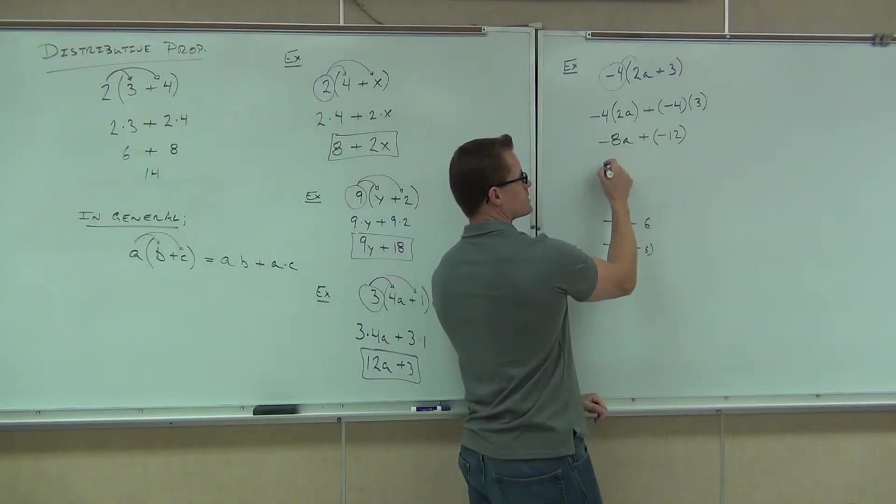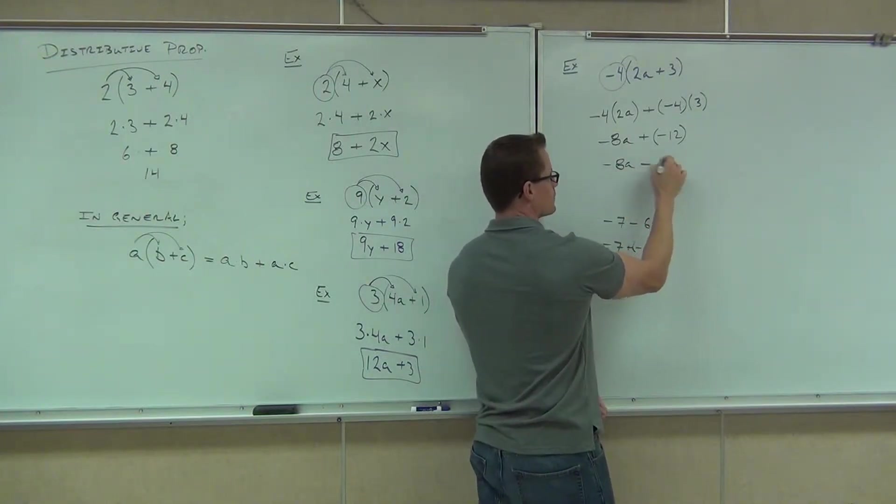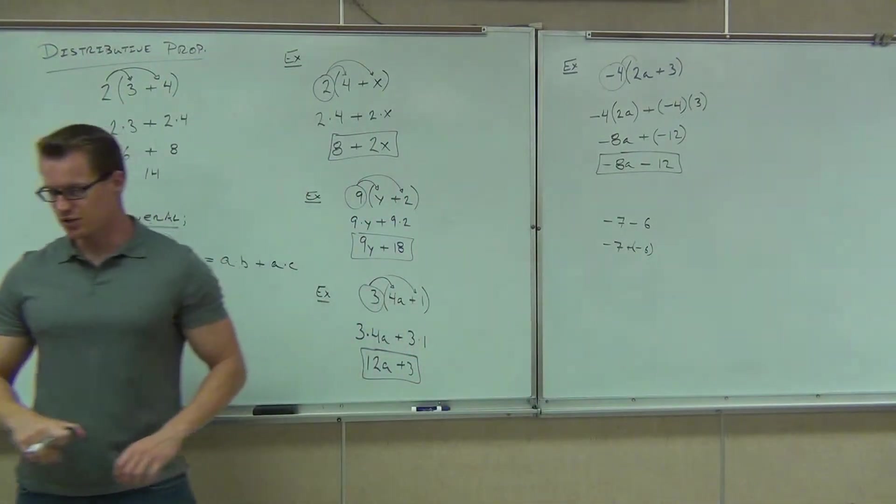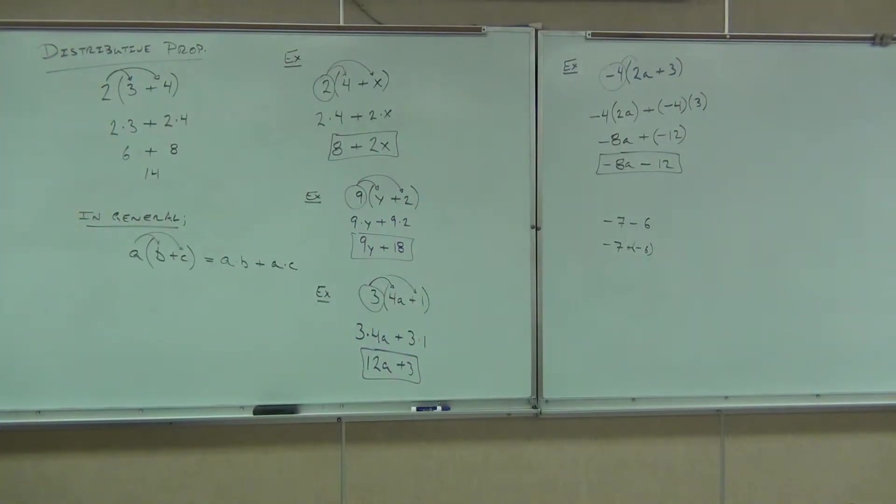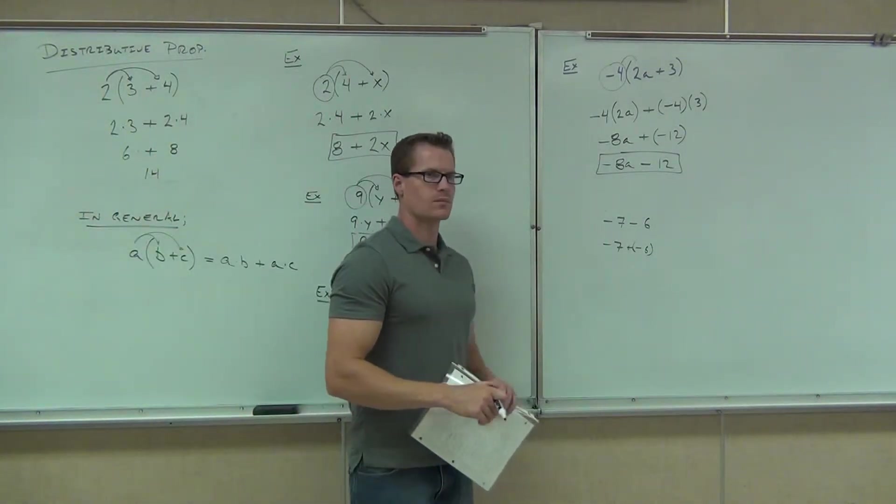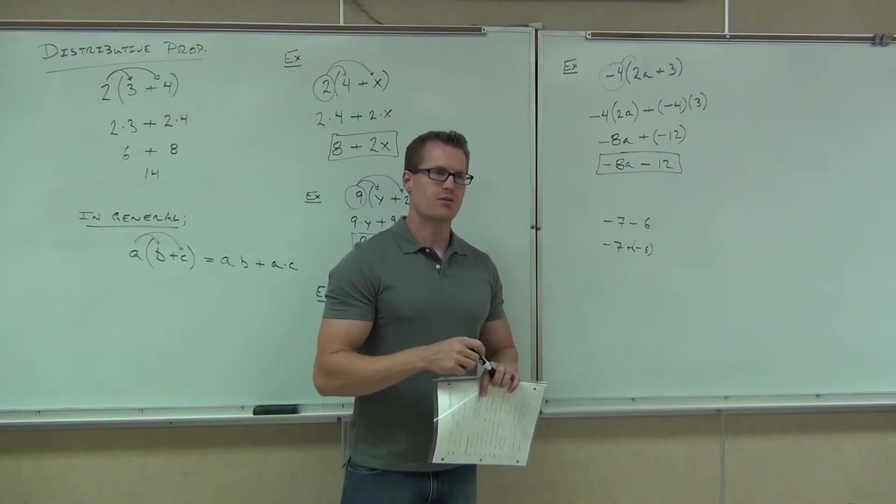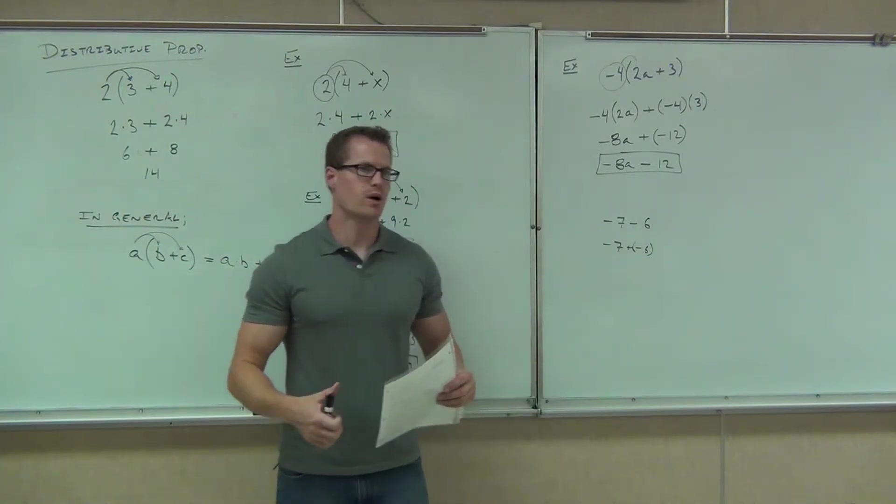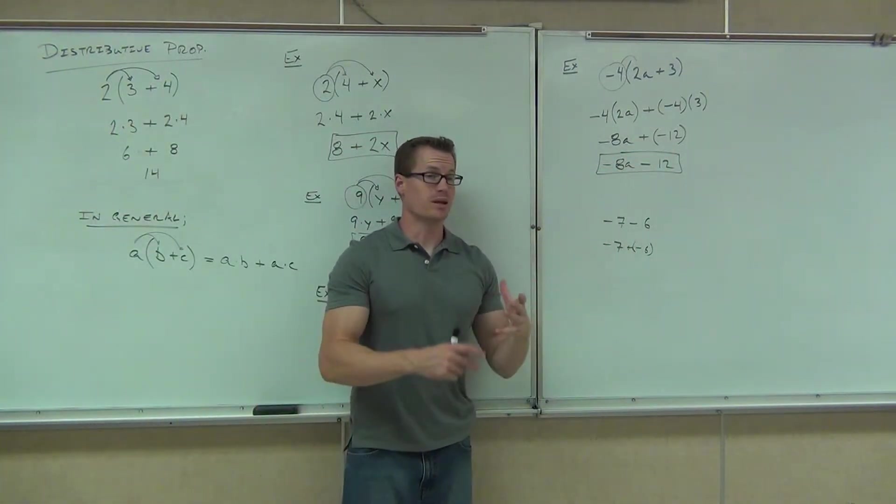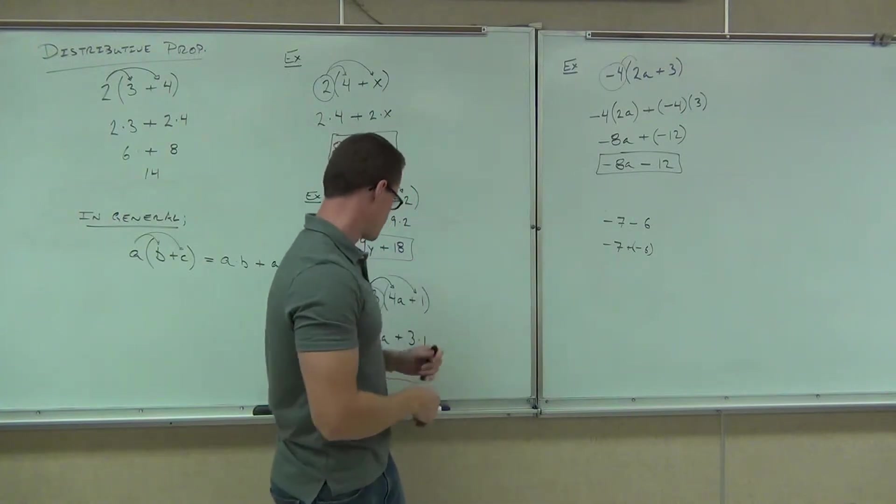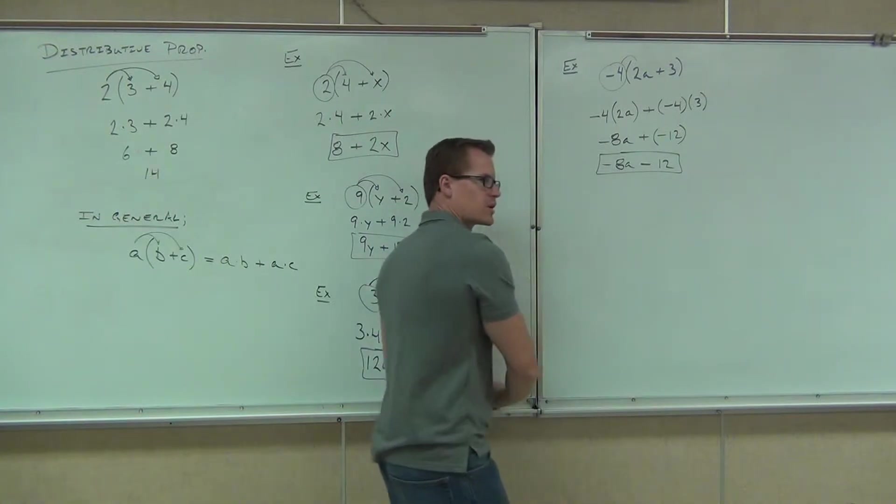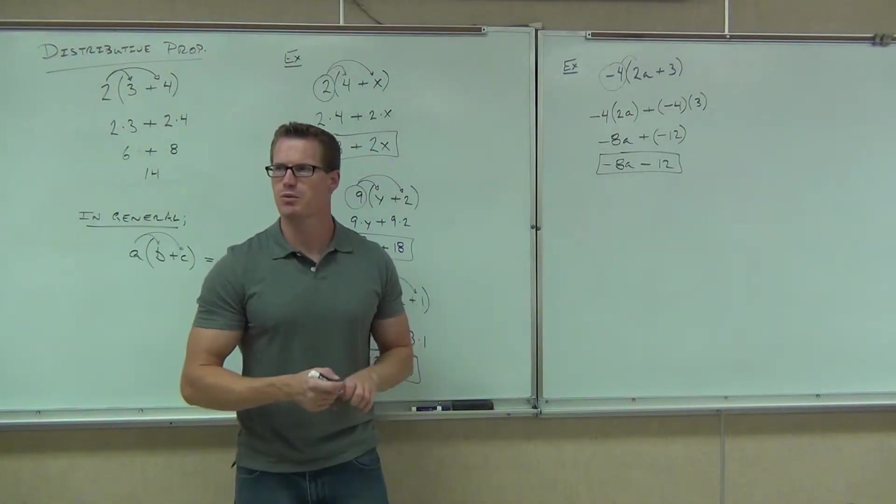So from here, we can say this is negative 8a minus 12. Negative 8a minus 12. Can we change it? You have to change it. Why? Because you never leave two signs next to each other. You always write it with one sign. So when you have this plus negative, it's understood that it's not really appropriate. We're going to write that with one sign at the end. Let's do one more together. I'll give you a couple on your own to make sure you get this, and then we'll move on.